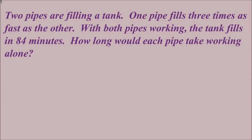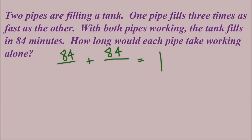Here's our last example. Two pipes are filling a tank. One pipe fills three times as fast as the other. With both pipes working, the tank fills in 84 minutes. How long would each pipe take working alone? We can identify time working together as 84 minutes — that's both numerators. For the denominators we need time working alone for each pipe, but we don't have actual quantities. However, one sentence relates the two: one pipe fills three times as fast as the other. A good strategy: make whatever is referred to last in the sentence equal to x. So the 'other' is x.